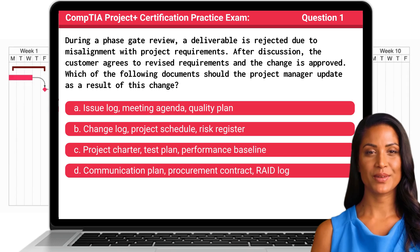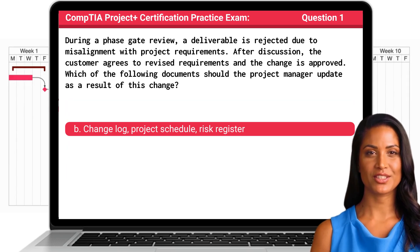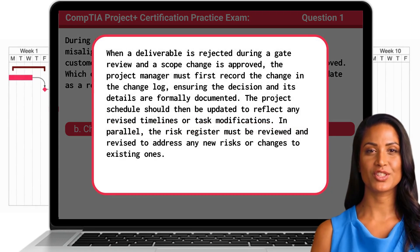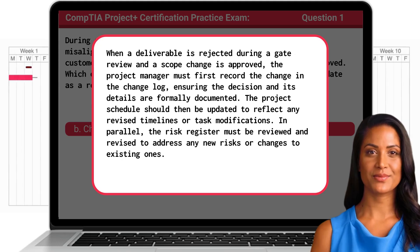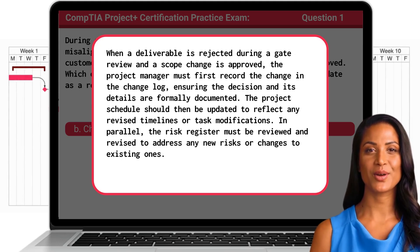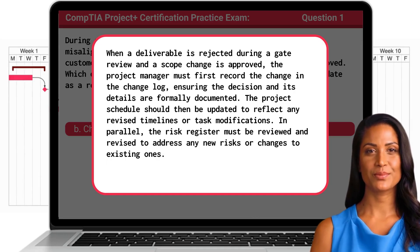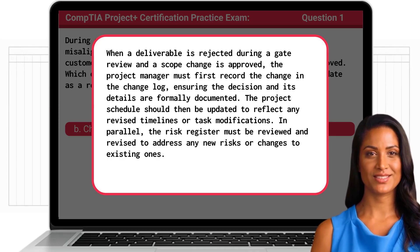The answer is B: Change Log, Project Schedule, and Risk Register. When a deliverable is rejected during a gate review and a scope change is approved, the project manager must first record the change in the change log, ensuring the decision and its details are formally documented. The project schedule should then be updated to reflect any revised timelines or task modifications. In parallel, the risk register must be reviewed and revised to address any new risks or changes to existing ones.